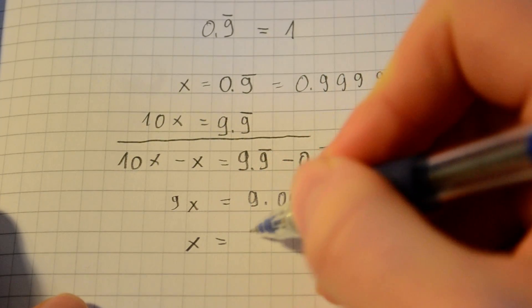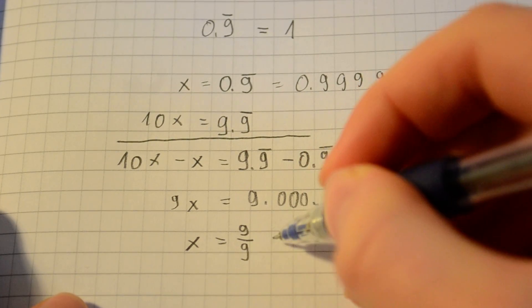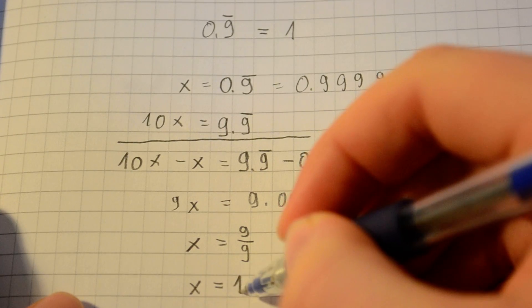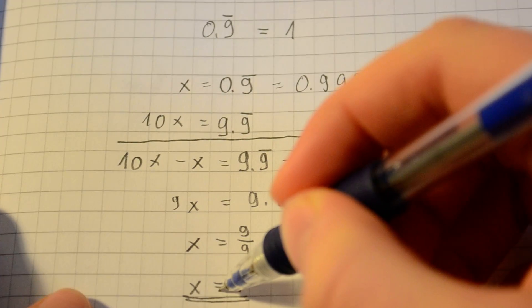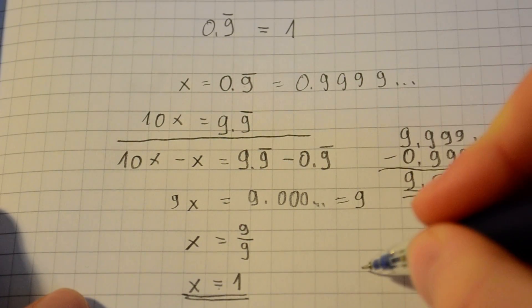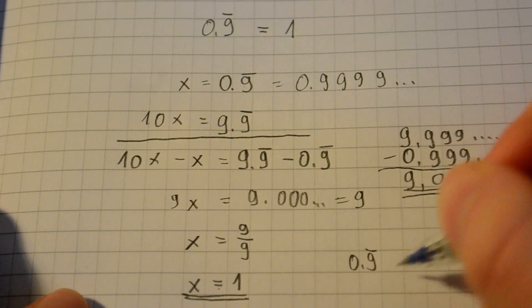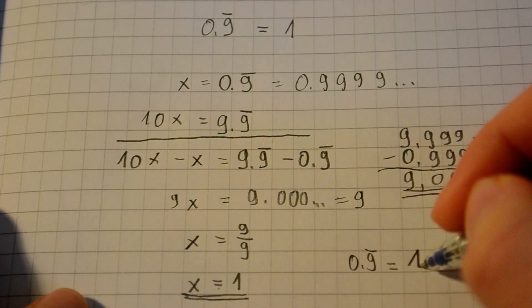And you get that x is 9 divided by 9, and x is the same as 1. And if you take a look at the x here and x here, you can see that 0.9 repeating really is the same as 1.